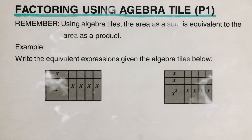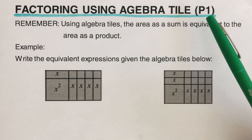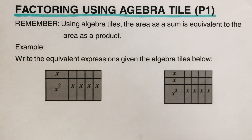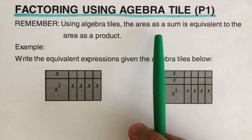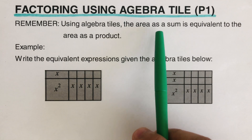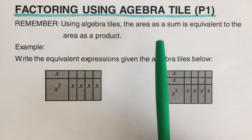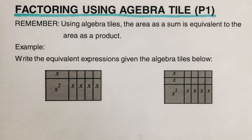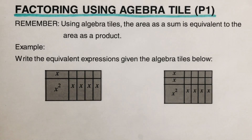Hello everyone, today we're going to be factoring using algebra tiles. This is the first part — I will put the link of the second part in the description box below. Note: using algebra tiles, the area as a sum is equivalent to the area as a product. Our target today is to come up with two equivalent equations: the general equation and its factored form.